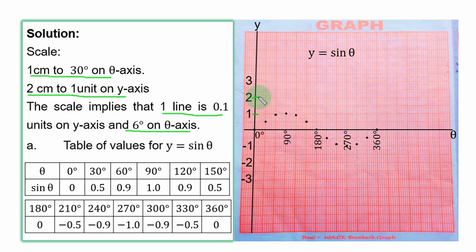When you go downward from the origin you have negative values. For the scale of 1 cm to 30 degrees on the theta axis, here should be 30 and here is 60. In order not to have too many points that are too close, I have to skip some labels, but your spaces are reserved for them — don't skip the actual values. I have shown you from 30 to 60 to 90 and so on.